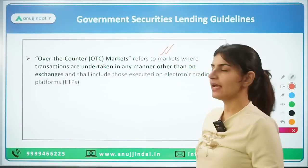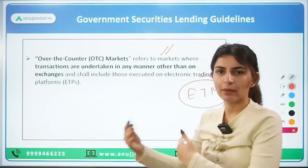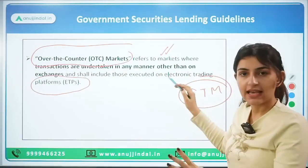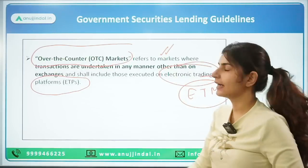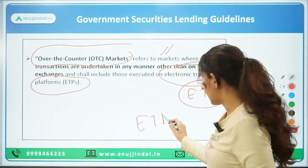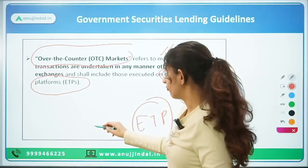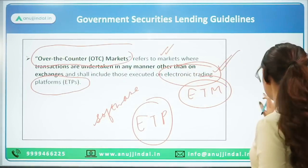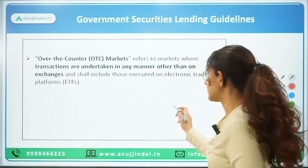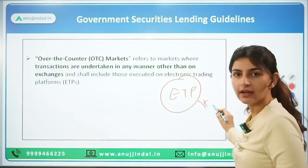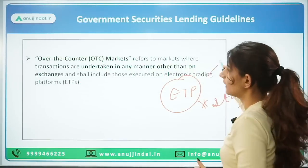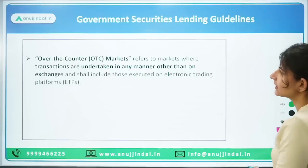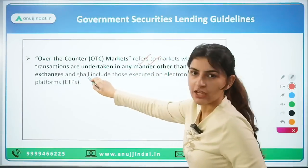This transaction will be done over the counter, not on a stock exchange. Over the counter means transactions undertaken in any manner other than on recognized exchanges. In this case, it will happen through an Electronic Trading Platform, or ETP — which is essentially algorithmic trading using software. The ETP is not a recognized stock exchange; it is a separate platform for over-the-counter transactions.